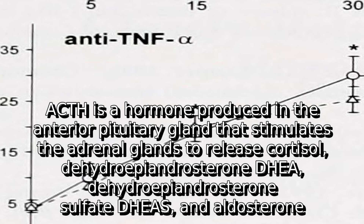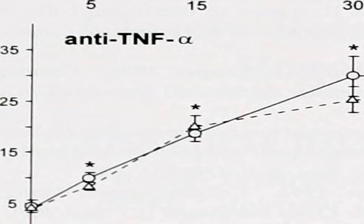ACTH is a hormone produced in the anterior pituitary gland that stimulates the adrenal glands to release cortisol, dehydroepiandrosterone (DHEA), dehydroepiandrosterone sulfate (DHEA-S), and aldosterone.